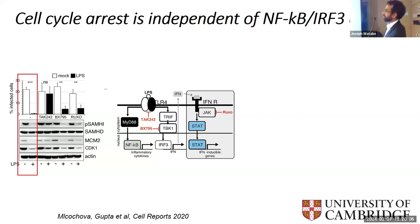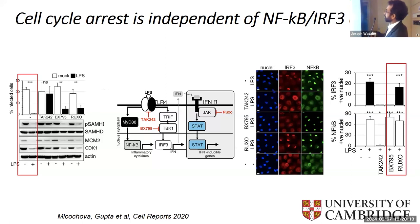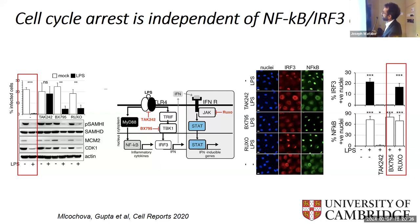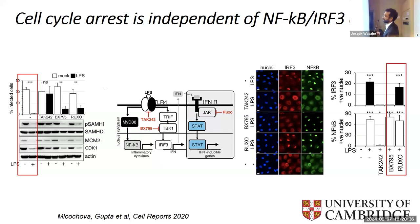This figure shows a nuclear translocation assay where you can detect IRF3 or NF-κB in the nucleus following different stimuli and use of different drugs — a control showing these macrophages are fully competent for IRF3 and NF-κB movement from the cytoplasm to the nucleus following activation of different aspects of TLR4.